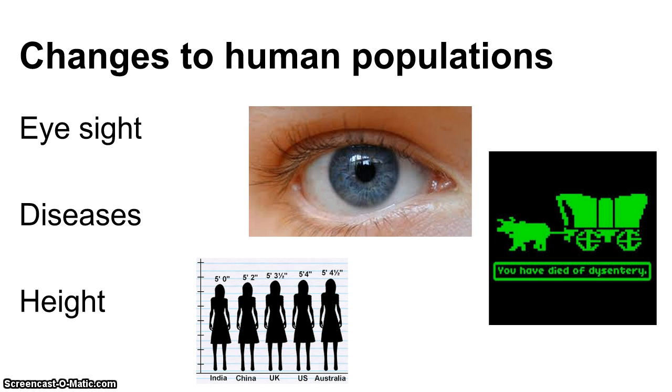So first off, what's happening to human populations over time? Here are a couple of examples to think about: eyesight, disease, and height.